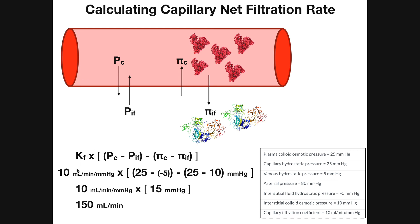So k sub f is 10 milliliters per minute per millimeters of mercury. P sub c, the capillary hydrostatic pressure, was 25 millimeters of mercury, minus the interstitial fluid hydrostatic pressure of negative 5 — so minus negative five, which means we're subtracting a negative. Then we subtract pi sub c minus pi sub IF: 25 millimeters of mercury minus 10 millimeters of mercury. So 25 minus negative 5 is 25 plus 5, or 30. Then 25 minus 10 is 15. So 30 minus 15 millimeters of mercury equals 15 millimeters of mercury.